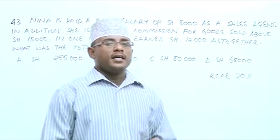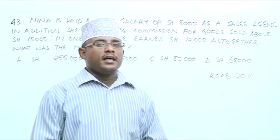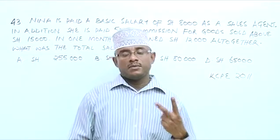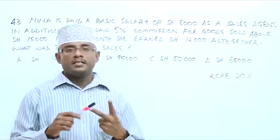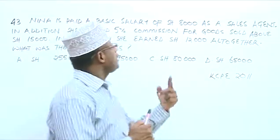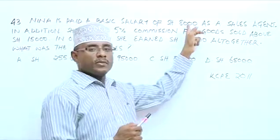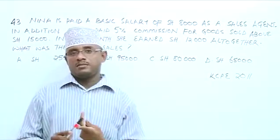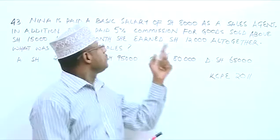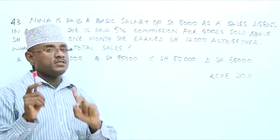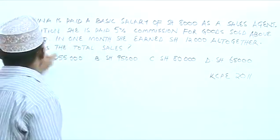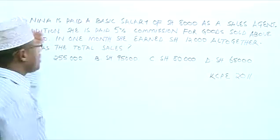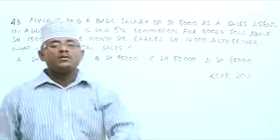Now, Nina, at the end of the month, she gets two things. One is the salary, and the salary is $8,000. And on top of that, she gets commission of 5%, but for sales above $15,000. Anything from $15,000 and below, she is not getting any commission.